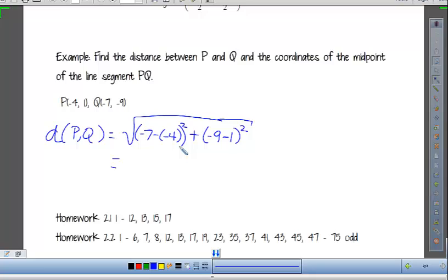But I'll say negative 7 minus negative 4 squared plus negative 9 minus 1 squared. So, negative 7 minus negative 4 is negative 3, but I'm squaring that. And then negative 9 minus 1 is negative 10. Squaring that, looks like we get the square root of 109. Questions about that?